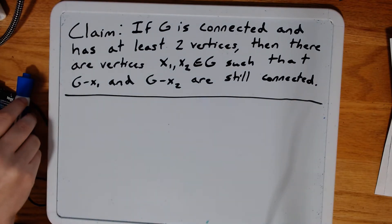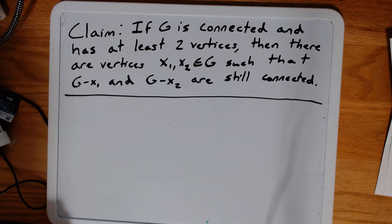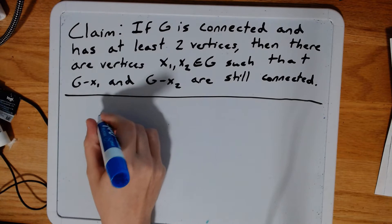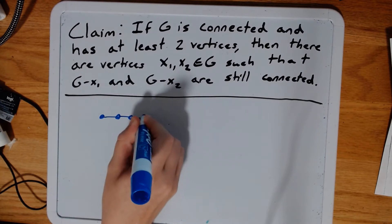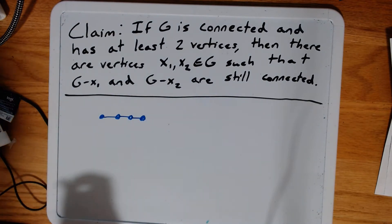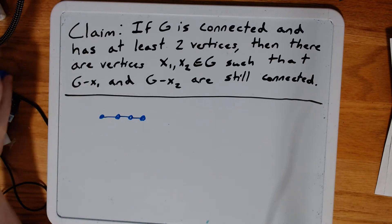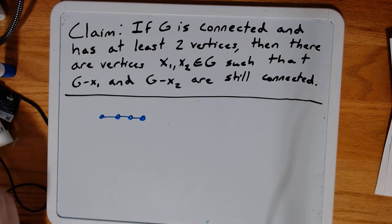So let's look first, before we try to prove this, at an example that might show us what this is telling us. I'm going to choose a real simple example: here's a path on four vertices. Let's think about what happens if we remove each vertex.